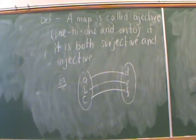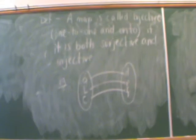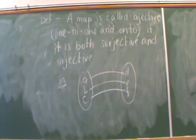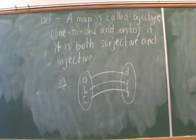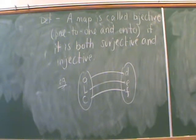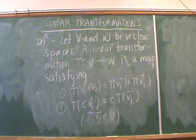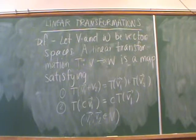A map is called bijective if it's both surjective and injective — you may have heard this as one-to-one and onto. The classic example has three elements on either side: all elements D, E, F come from elements A, B, and C on the left, and the range of the map is equal to the codomain. We'll work more with surjective, injective, and bijective maps on the worksheet and in a couple of chapters.